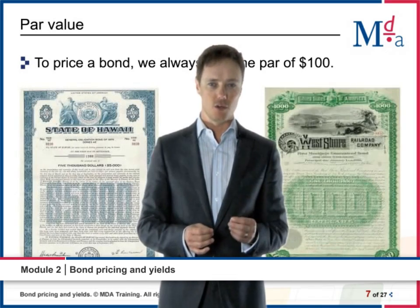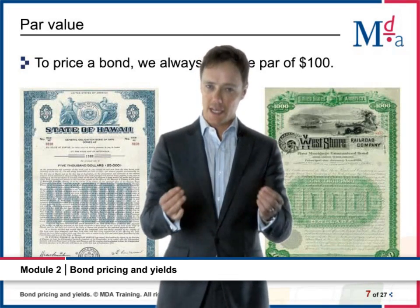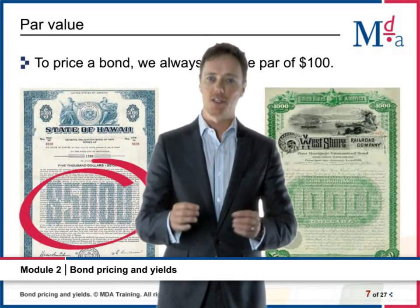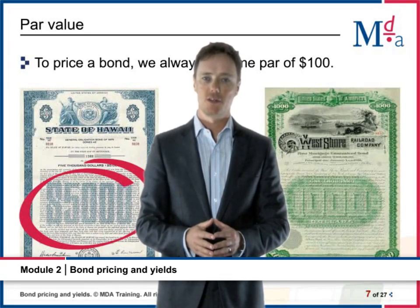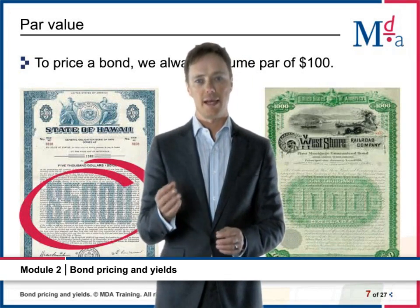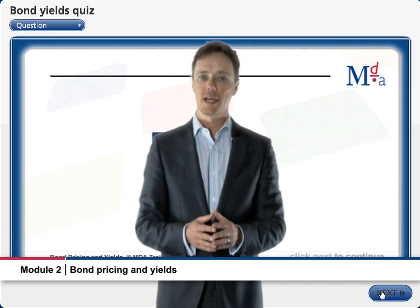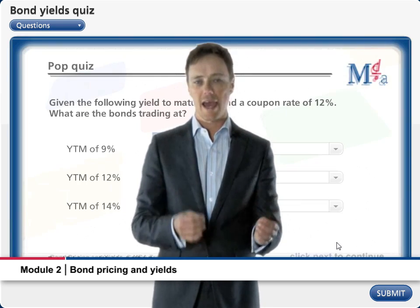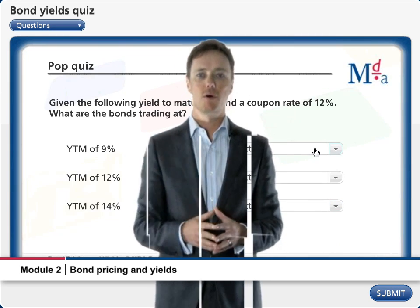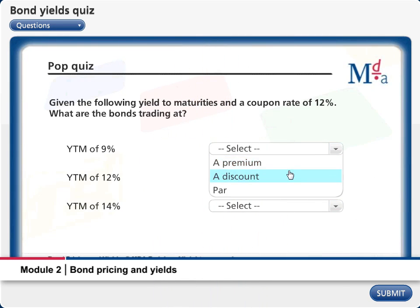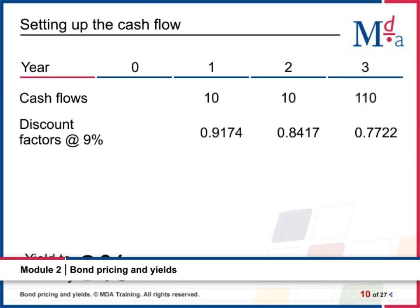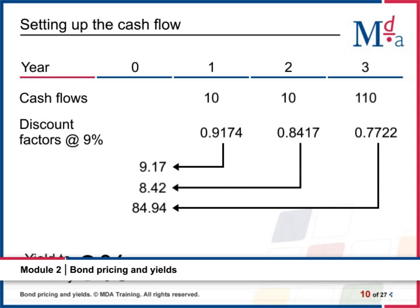In part two, we extend the discussion on discounted cash flows to price plain vanilla bonds, looking at both annual and semi-annual bonds. We also look at the relationship between bond prices and the yield to maturity.